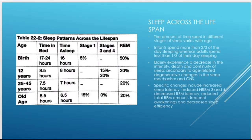Sleep across the lifespan: as you age, sleep changes. The amount of time spent in different stages of sleep varies with age. Infants spend more than two thirds of their time sleeping, whereas adults spend less than one third. The need for sleep decreases as you age. Elderly people tend to have a lot of trouble with sleeping, experiencing a decrease in intensity, depth, and continuity of sleep, secondary to age-related degenerative changes in the sleep mechanism and CNS.